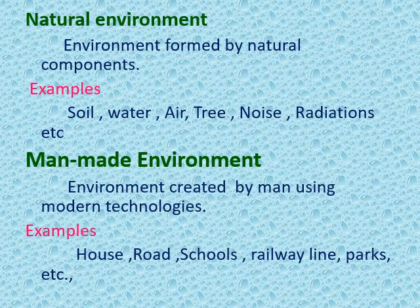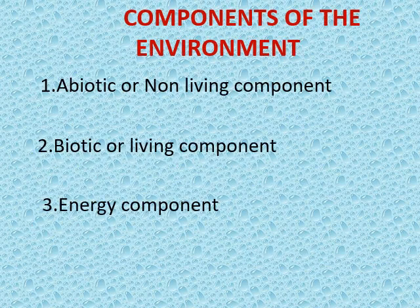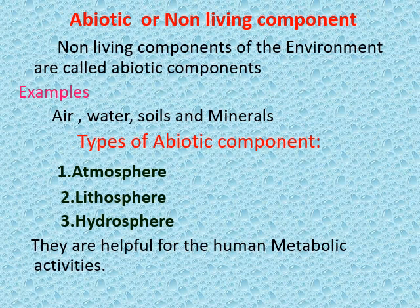Components of the environment: There are three different components in the environment — abiotic, biotic, and energy component. Abiotic components are non-living components. Biotic components are living components. All the non-living components of the environment are called abiotic components. Examples include air, water, soil, etc.